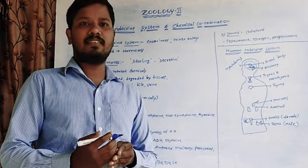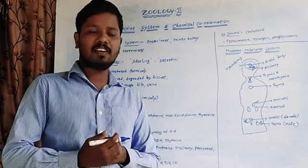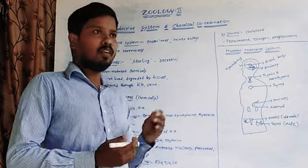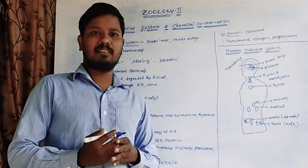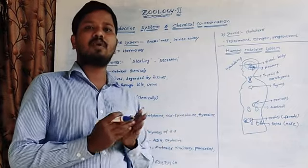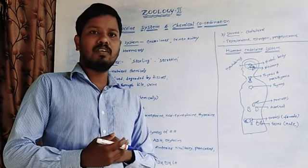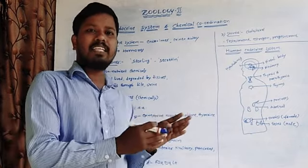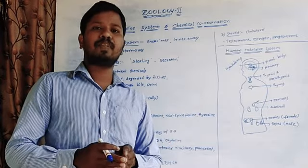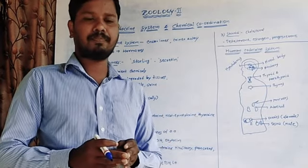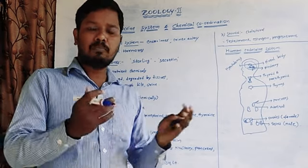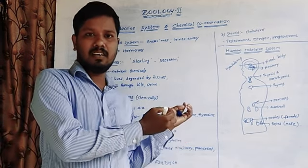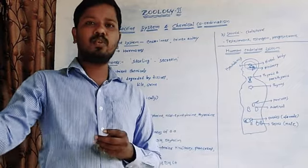Endocrine glands are ductless glands, meaning they do not possess ducts. These glands secrete their secretions into the bloodstream, and the blood carries the hormones to the target organ.